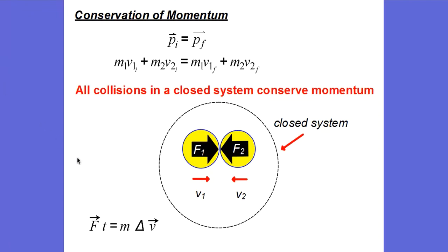We can justify this statement by looking at the action-reaction pair of forces between colliding objects. When object one collides with object two, one exerts a force on two, and the reaction is that two exerts a force on one. Forces are equal in magnitude but opposite in direction, and the time of the collision is the same for both objects.